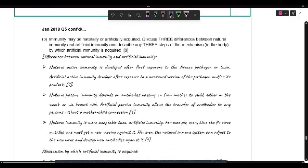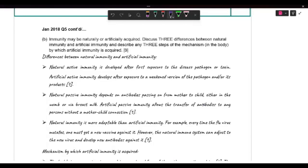So differences. Well, we have natural is developed after exposure to the disease pathogen or toxin. And artificial active immunity develops after exposure to a weakened version of the pathogen and or its products. So big difference in terms of when and how you get exposed and how that active immunity is triggered.